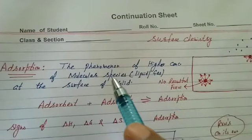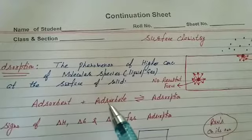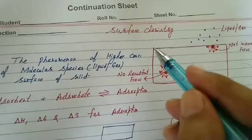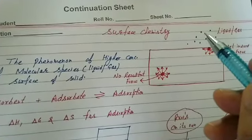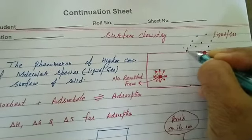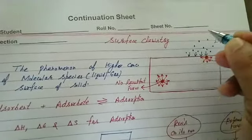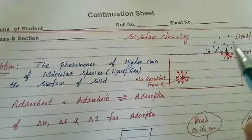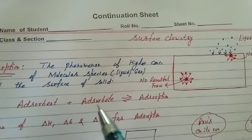Adsorption is the phenomenon of higher concentration of molecular species — liquid or gas — at the surface of a solid. The solid substance on the surface of which adsorption takes place is called the adsorbent (shown as the red portion). The molecular species that get adsorbed on the solid surface due to intermolecular forces are called the adsorbate (shown as the blue area). So adsorption = adsorbent + adsorbate.